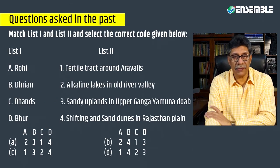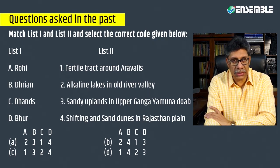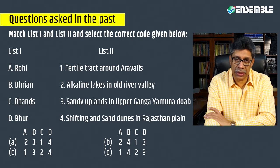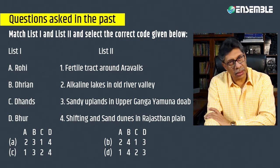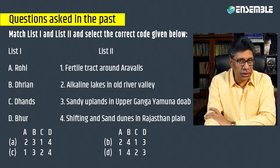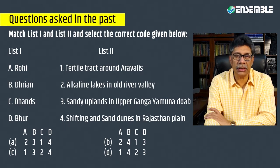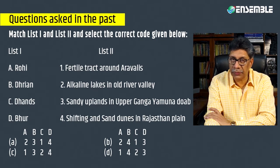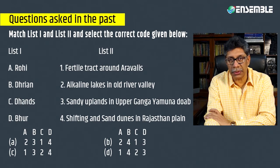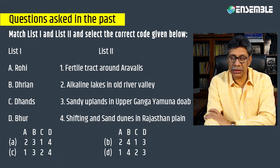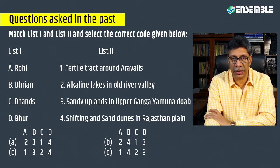The second question is a match list — List One and List Two. List One: A is Rohi, B is Drian, C is Dhanse, D is Bhur. List Two: 1 is fertile tract around the Raulese, 2 is Alkali Lake in the Old River Valley, 3 is sandy uplands in Upper Ganga-Yamuna Doab, and 4 is shifting sand dunes in Rajasthan plains. Select the correct code given below.